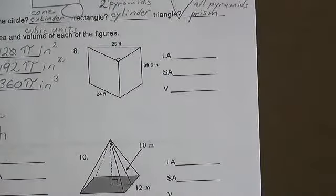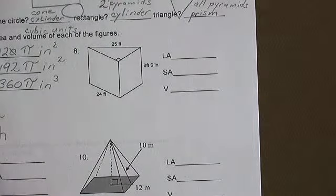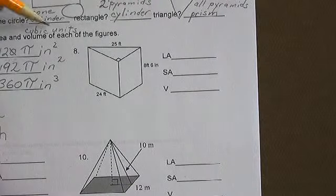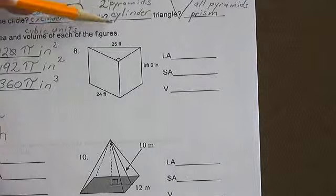Geometry Review, Problem 8. Find the lateral area, total surface area, and volume, which is measured in cubic units, for each of the figures.